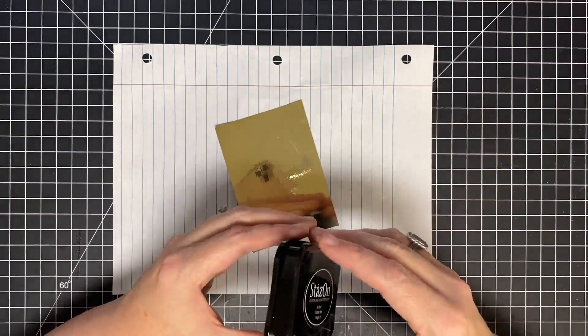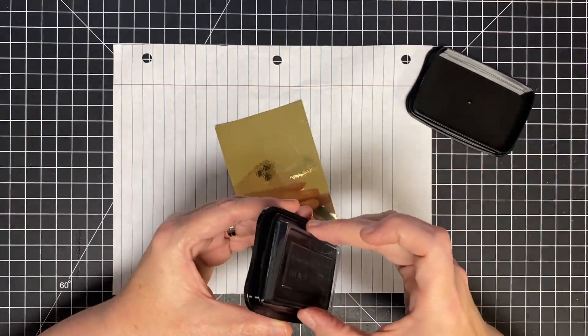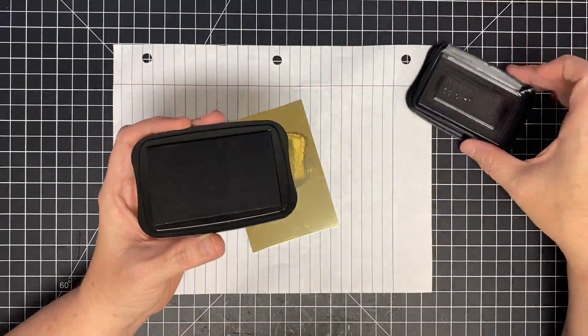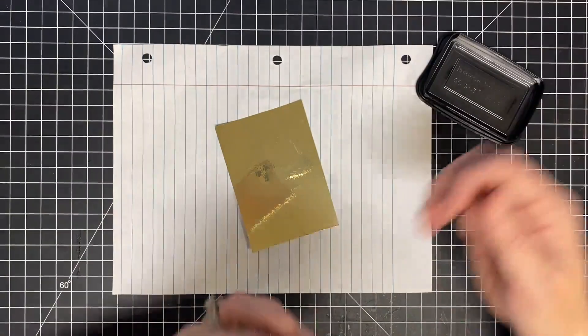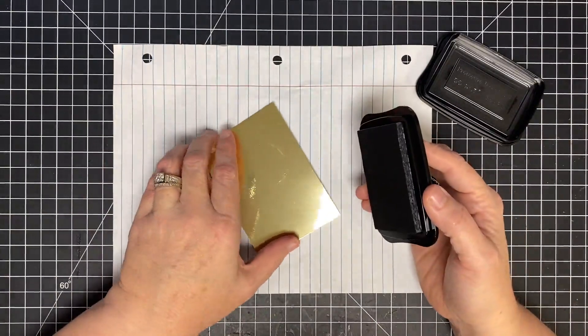The deal with Stazon is this is an ink that will dry permanently on porous surfaces. So, that's where we're going to use Stazon, and it also smells amazingly of almonds, cherries, something like that.